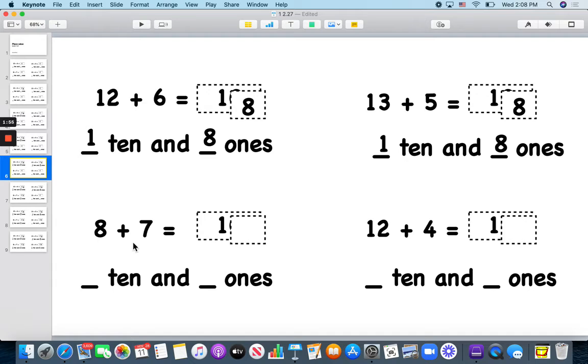8 plus 7. If I give 8 two from my 7, I would have 10 and 5. So that must mean 8 plus 7 is 15. Look at this. Here's my 10 hiding underneath there and my 5. So I have one 10 and 5 1s.